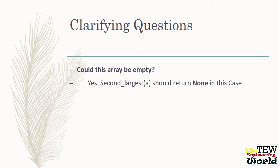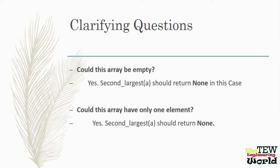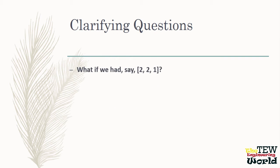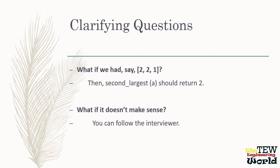Whenever you get a question in a coding interview, you should always ask clarifying questions. For this question, you might ask: could this array be empty? The answer is yes — return none in that case. None in Python is like null in some other languages and means an empty value. Could this array have only one element? Yes — second largest should return none as well. What if we had 2 and 1? Second largest should return 2. The interviewer decides if your answer is correct, so always ask what the correct behavior should be if you are not sure.